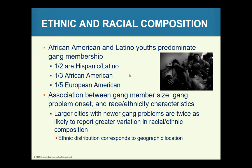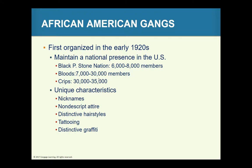Looking at some African American gangs, familiar ones include the Black Peace Stone Nation, the Bloods, and the Crips. They were first organized in the early 1920s, with unique characteristics including nondescript attire, tattooing, and distinctive graffiti.